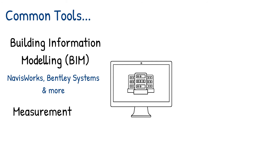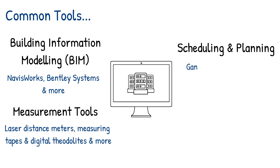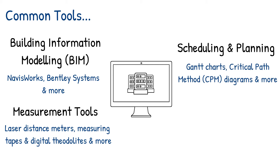Measurement tools. Laser distance meters, measuring tapes and digital theodolites are used for on-site measurements to verify dimensions and quantities. Scheduling and planning tools such as Gantt charts and critical path method diagrams, often created using project management software, are used to plan and monitor project timelines and resource allocations.